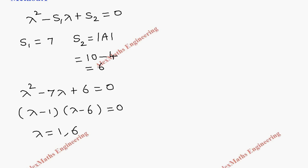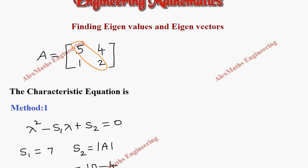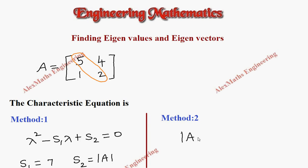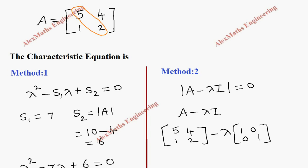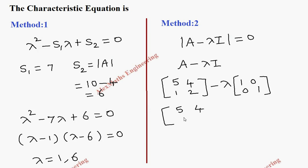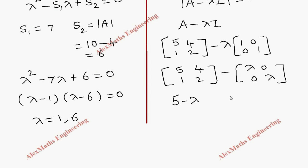We get two values for lambda: 1 and 6, so these are the eigenvalues. Now for the second method, we use det(A minus lambda I) equals zero. A minus lambda I is a matrix and we find its determinant and set it equal to zero. We have A which is the matrix [5, 4; 1, 2] and I is the identity matrix [1, 0; 0, 1]. When we multiply lambda inside we get lambda times I as [lambda, 0; 0, lambda].